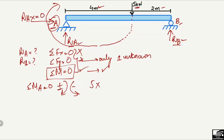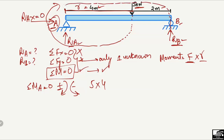The moment due to the 5 kN load equals force multiplied by moment arm: 5 kN × 4 meters (the distance from A to the point of load application). The reaction RB also creates a moment about point A in the counterclockwise direction, so it is taken as negative: minus RB multiplied by its moment arm, which is 4 + 2 = 6 meters. Setting the summation of moments at A equal to zero.